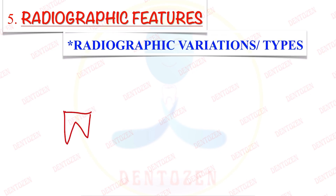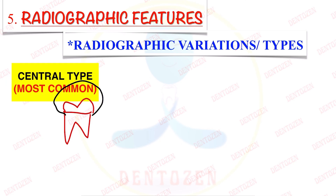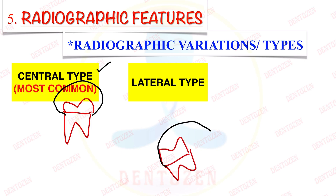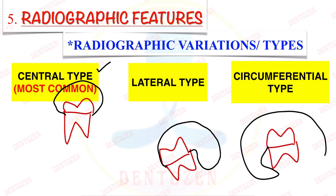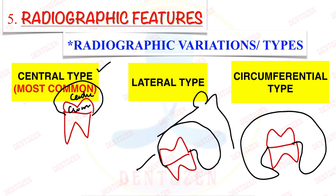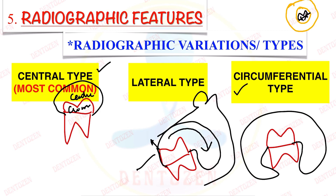Radiographic types: central type — most common, the tooth is in the center of the radiolucency; lateral type — the cyst is on the lateral side of a partially erupted tooth that shifted the cyst to one side; circumferential type — the cyst completely envelops the tooth. Entrance question: the circumferential type of dentigerous cyst gives the appearance that the tooth is erupting through a donut.